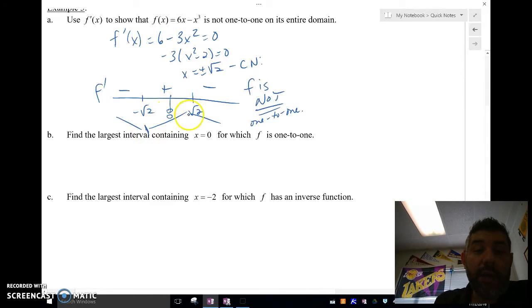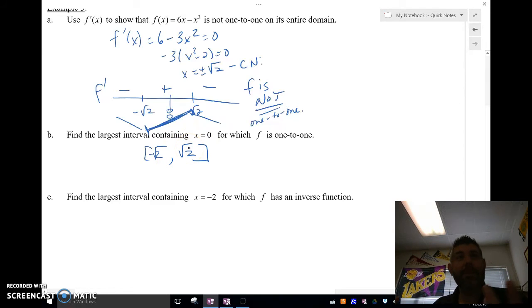And so between here and here, I'm going to have increasing. So my interval is going to be negative root 2 to positive root 2. And that's it. So it's always increasing in that interval.